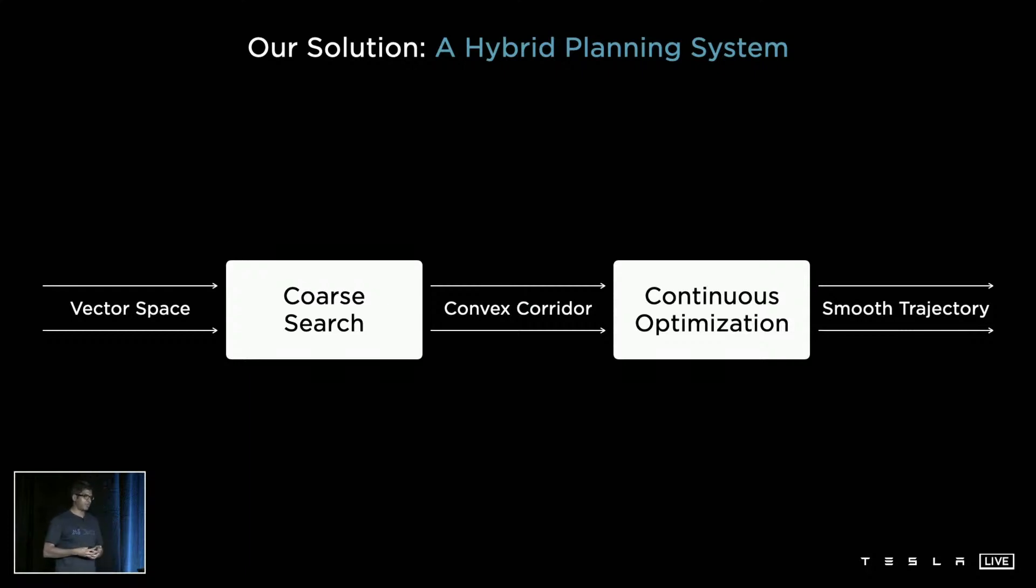Our solution to this entire problem is to break it down hierarchically. First, use a coarse search method to crunch down the non-convexity and come up with a convex corridor, and then use continuous optimization techniques to make the final smooth trajectory.